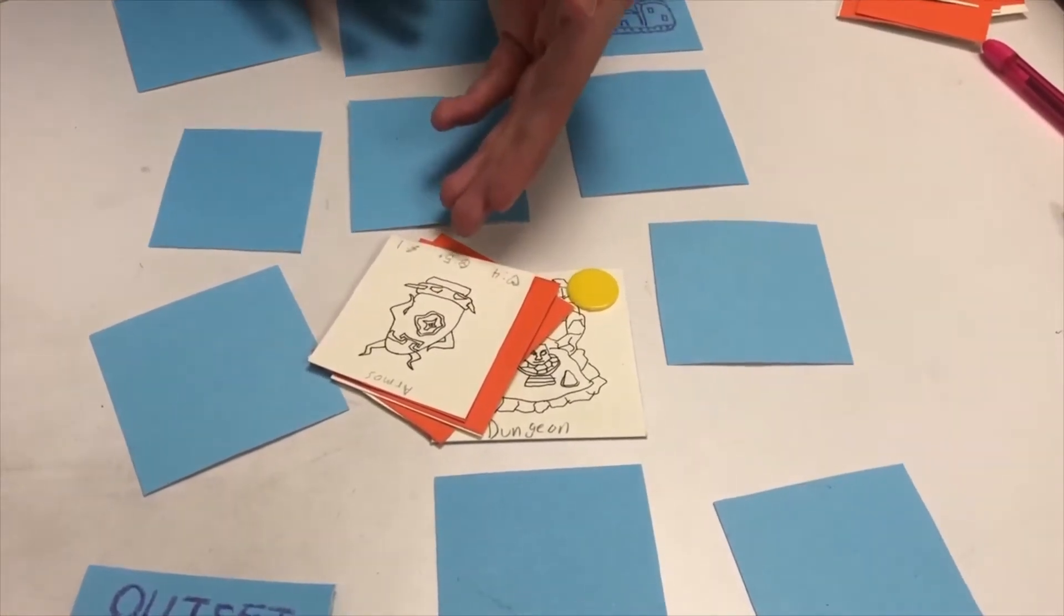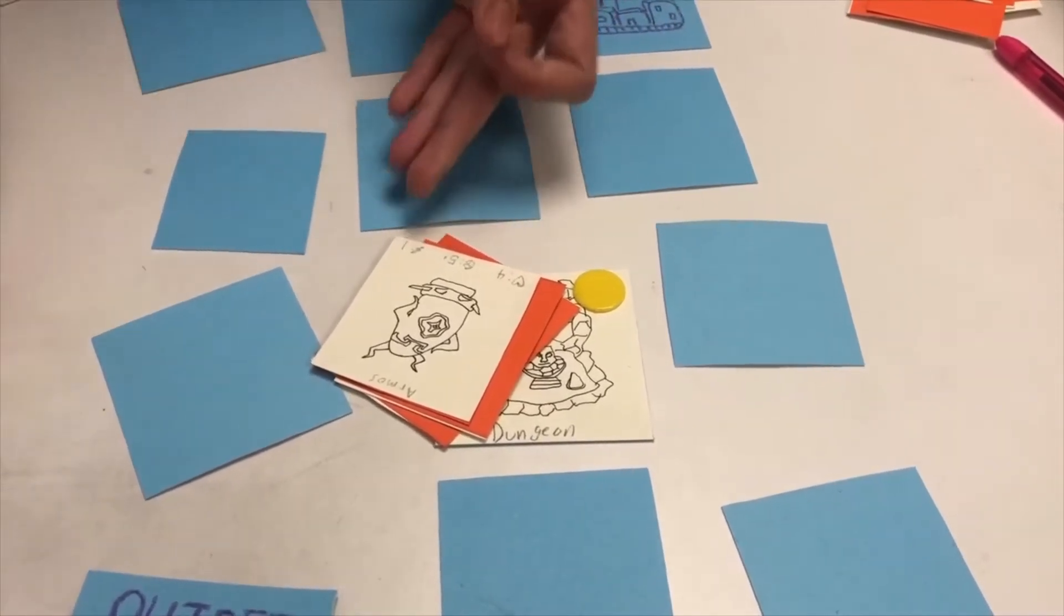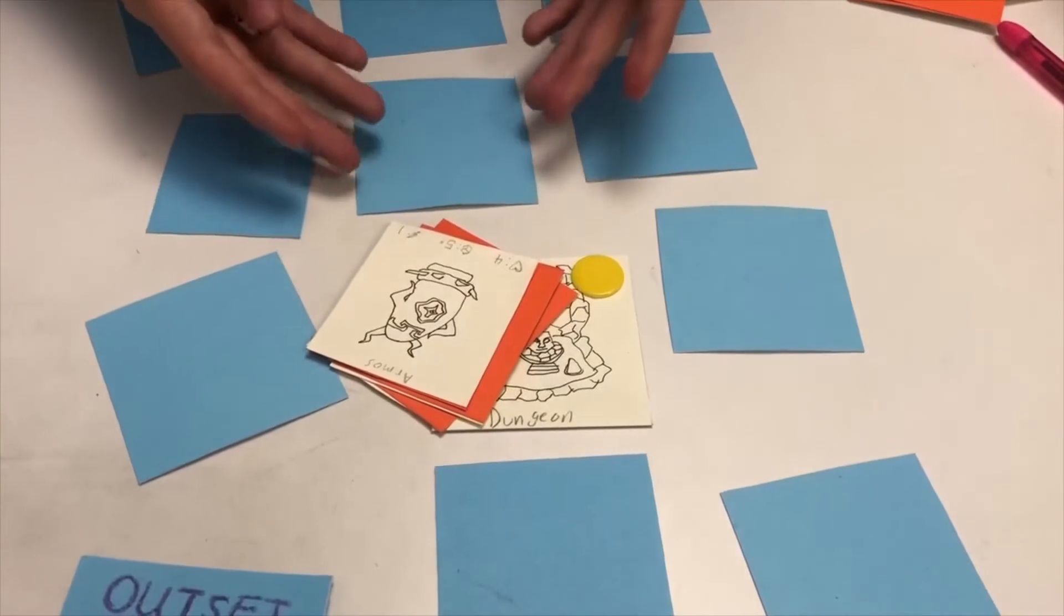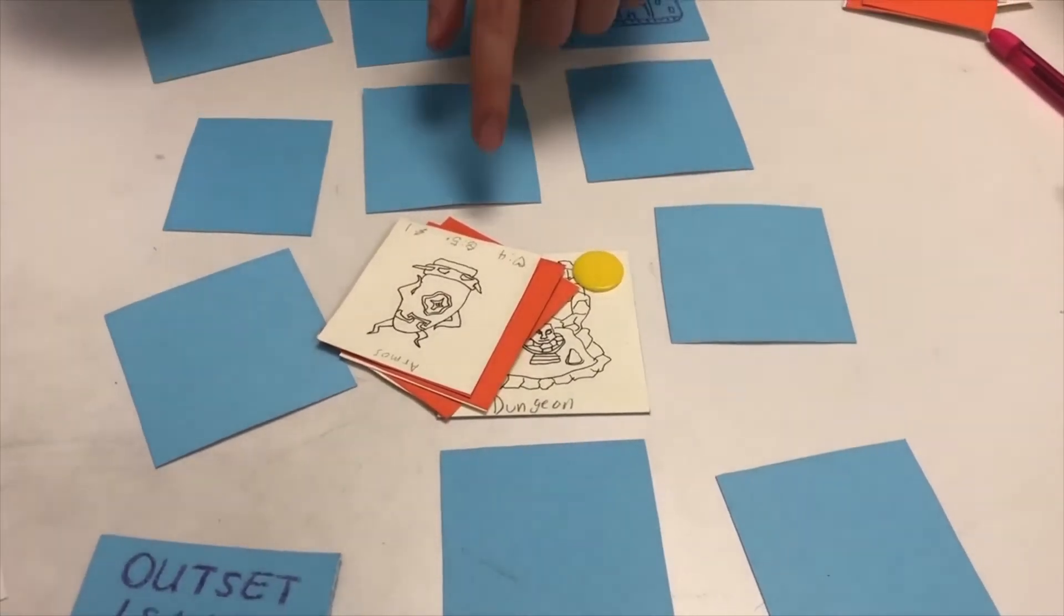For example, this monster has four health, you must roll five or higher to deal damage to it, and it has an attack value of one. Which means that if you attack it and your result is lower than five, you take one damage.